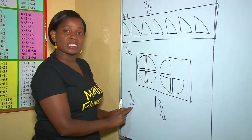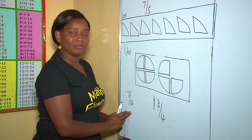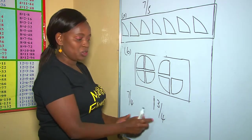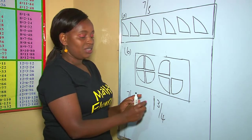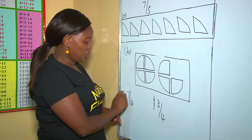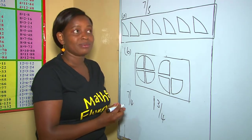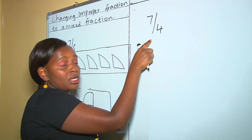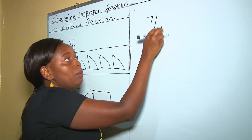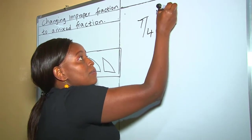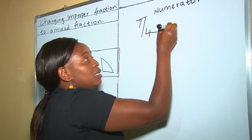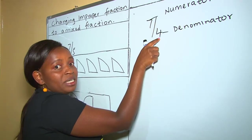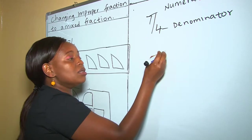7 out of 4 is improper since the numerator is bigger than the denominator. Our second diagram has helped us to change the improper fraction to a mixed fraction. Therefore, we can as well change this one using the division method. In fraction, this line means division — that is, numerator divided by the denominator. So, we do long division.